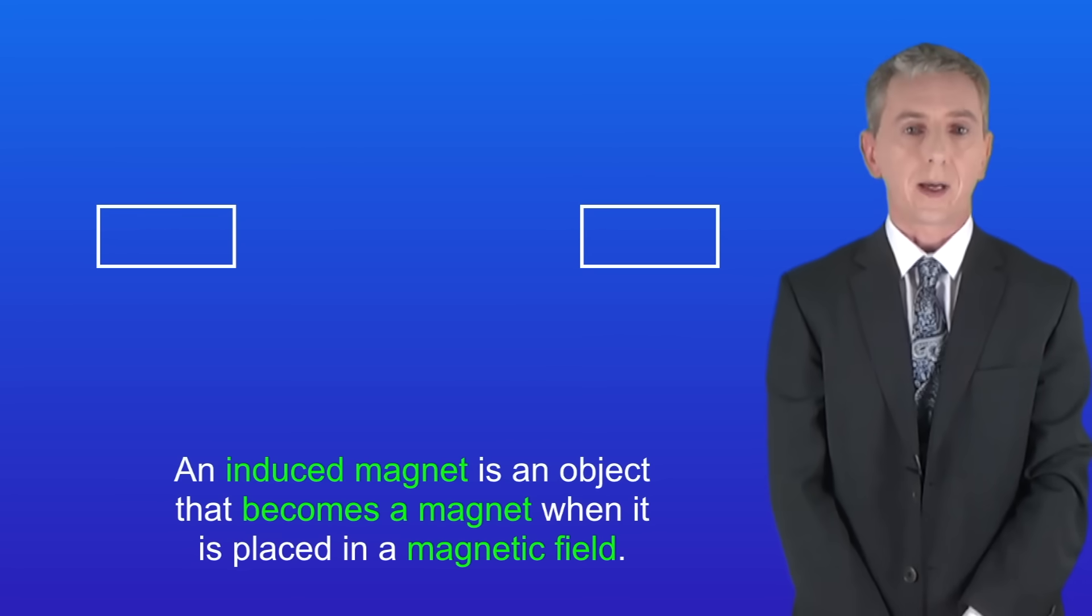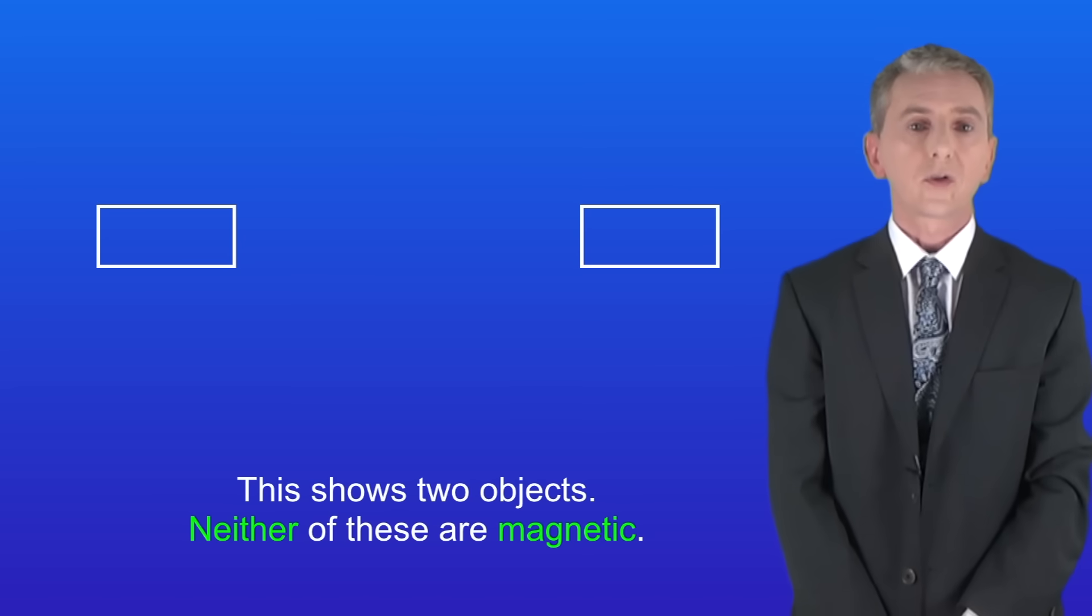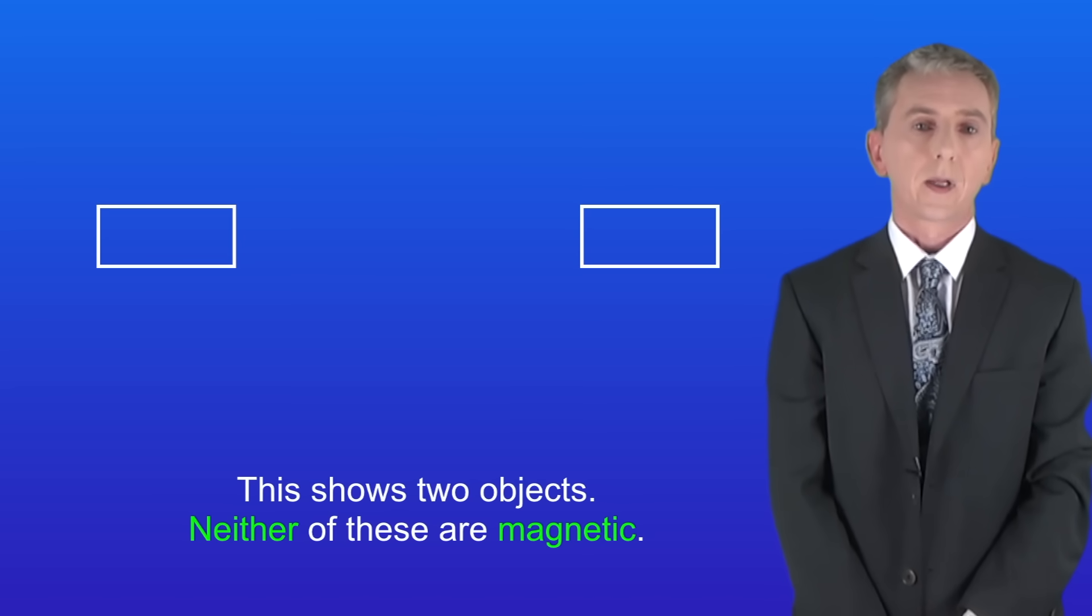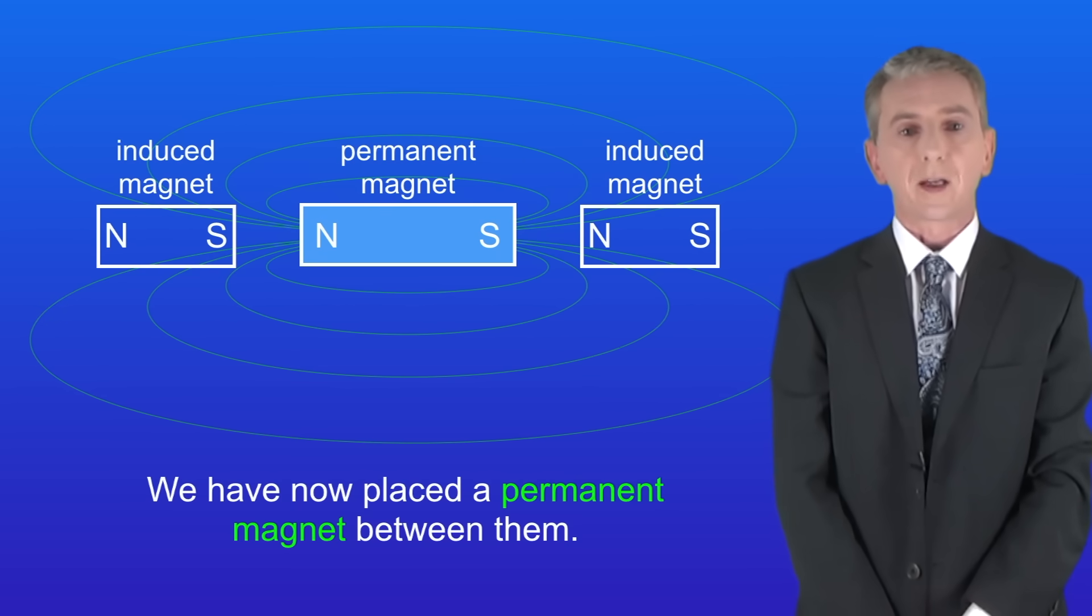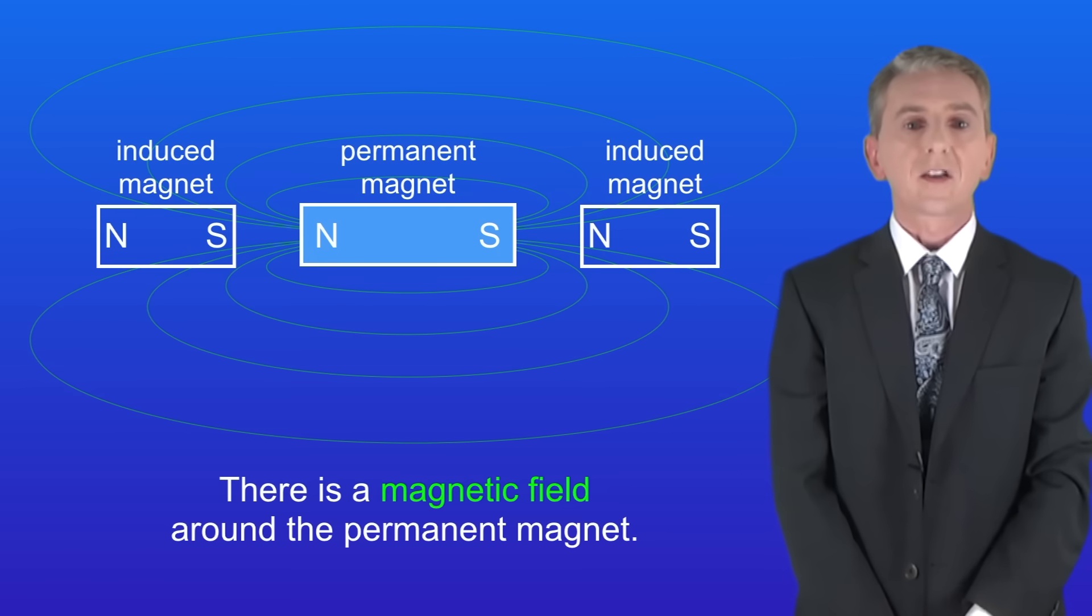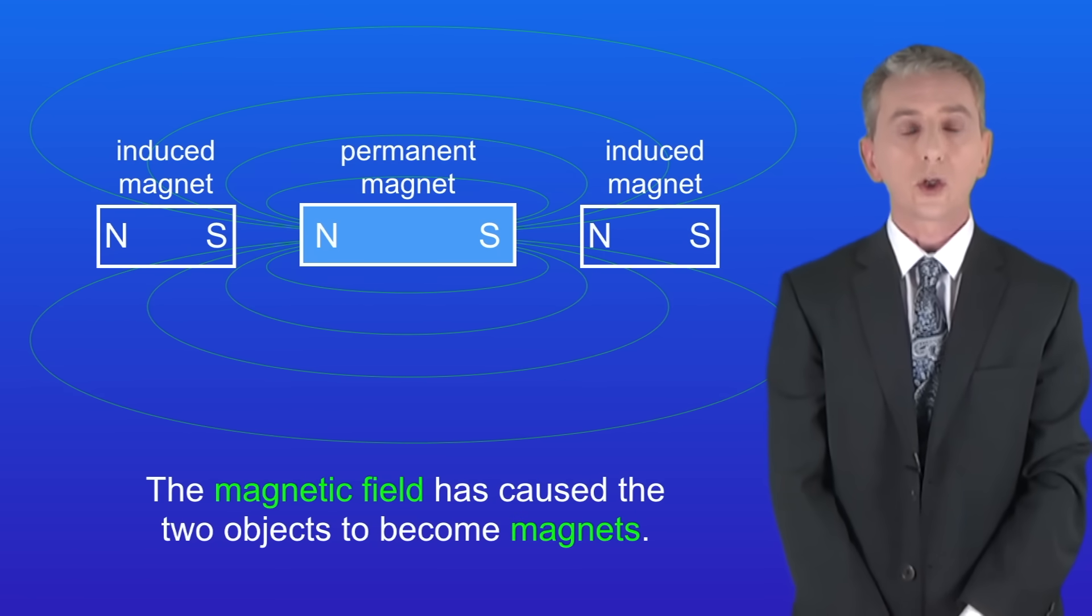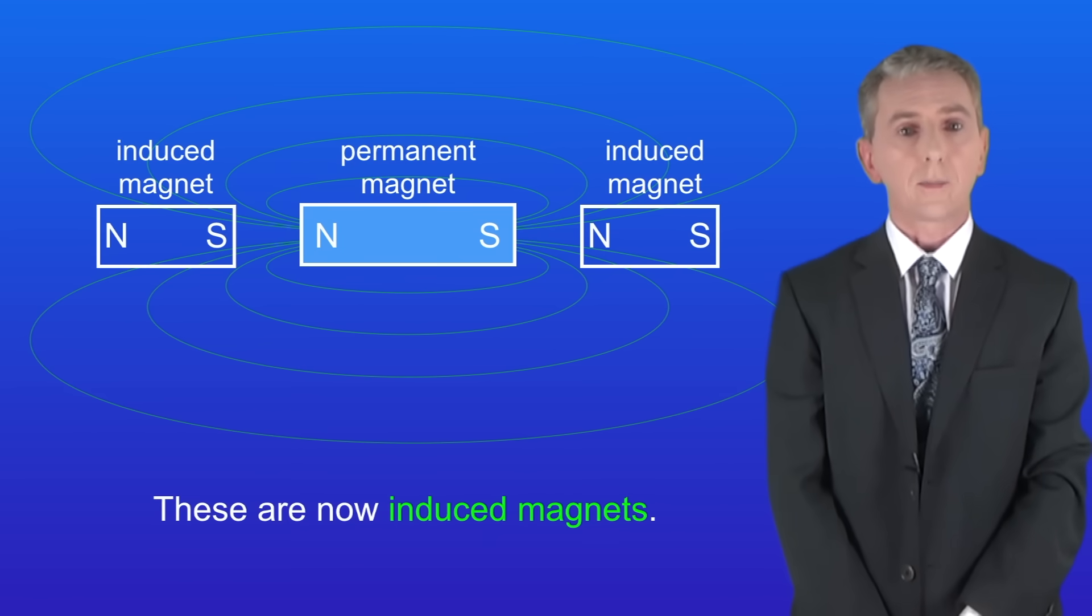An induced magnet is an object that becomes a magnet when it's placed in a magnetic field. I'm showing you here two objects and neither of these are magnetic. We've now placed a permanent magnet between them. As you can see there's a magnetic field around the permanent magnet. The magnetic field has caused the two objects to become magnets. So these are now induced magnets.